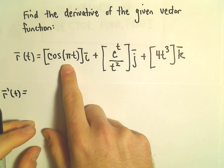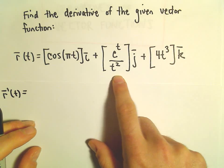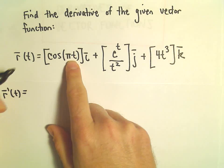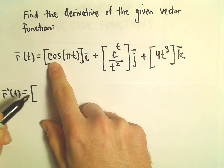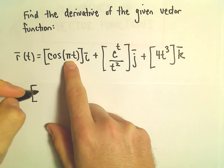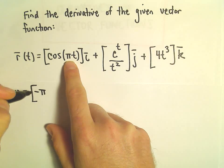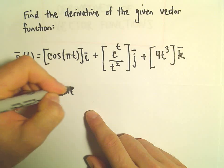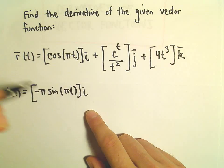So we'll take the derivative of the stuff in front of i, the stuff in front of j, and the stuff in front of k. So when we take the derivative of cosine pi t, we'll get negative sine times pi t, but then we'll have to take the derivative of the inside, so we'll pick up a pi. So we'll have negative pi times sine of pi times t, all of that times i.